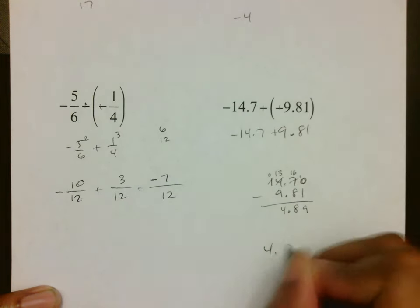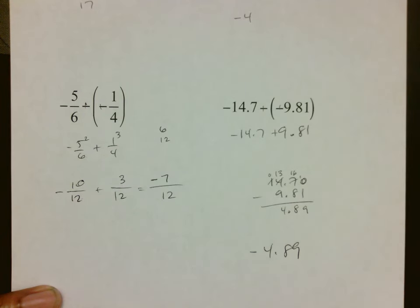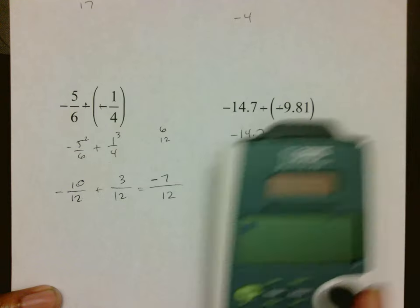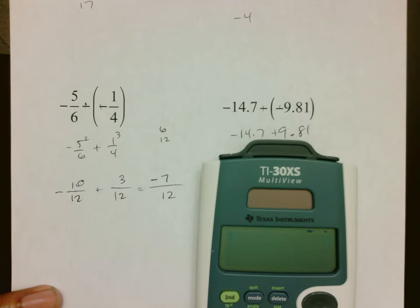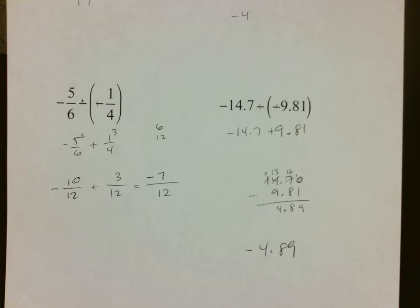But if 14.7 was bigger, then it should be negative 4.89. And you should take your calculator and make sure you can do both ways. Negative 14.7 minus parentheses negative 9.81, and there we go with our negative 4.89, which matches our answer.